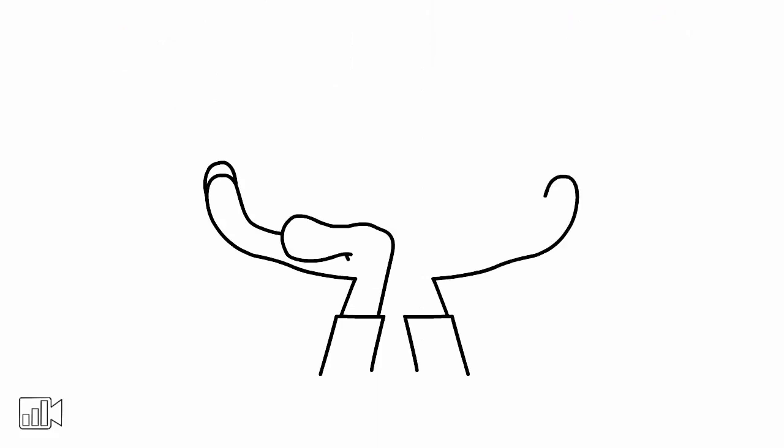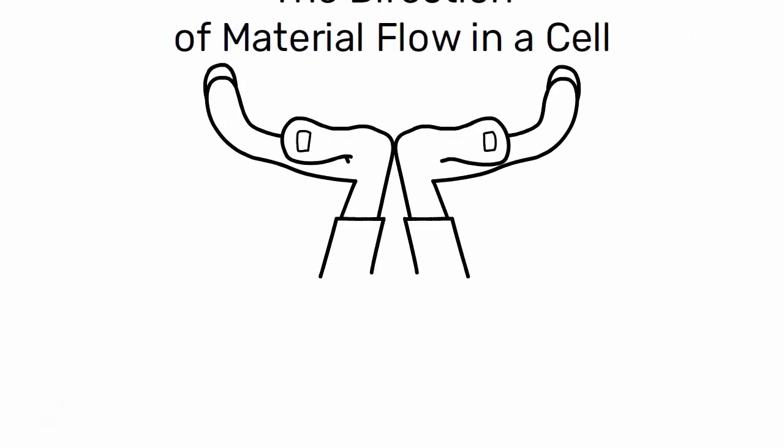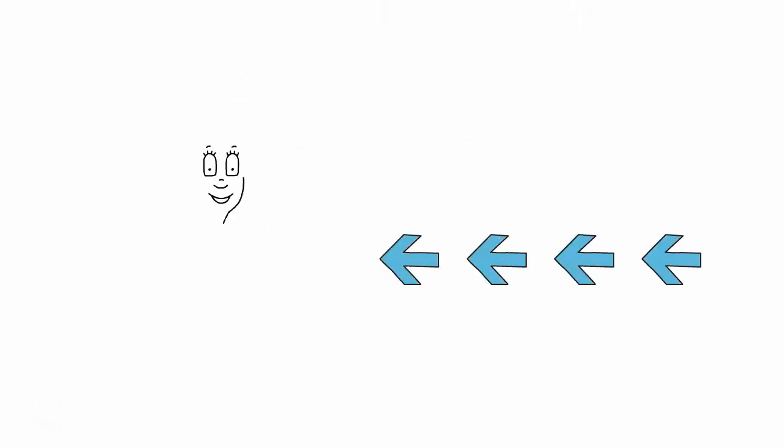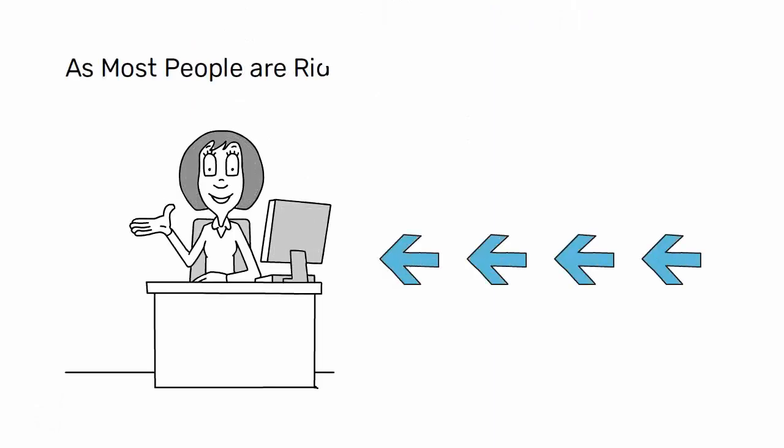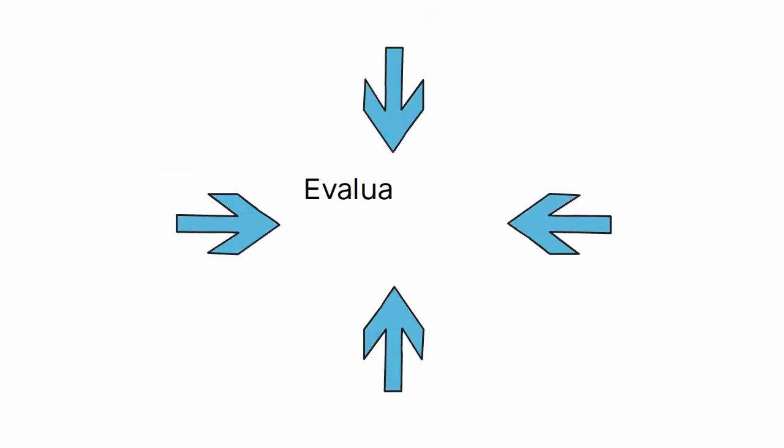Another interesting point to consider is the direction of material flow in a cell. Some argue that it should flow from right to left relative to the operator, as most people are right-handed and it's more efficient and natural to work from right to left. However, it's not always the case. Material flow direction can vary and should be evaluated on a case-by-case basis.